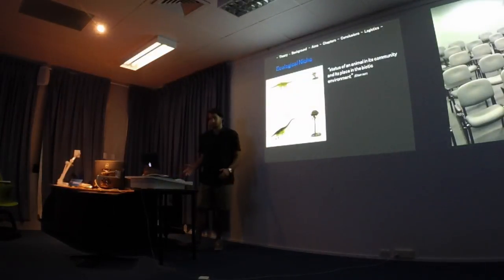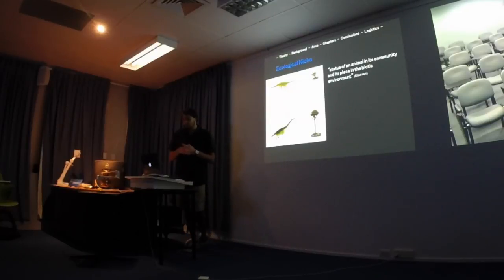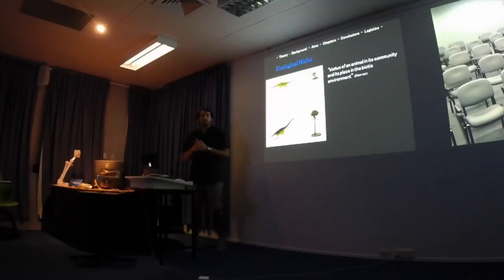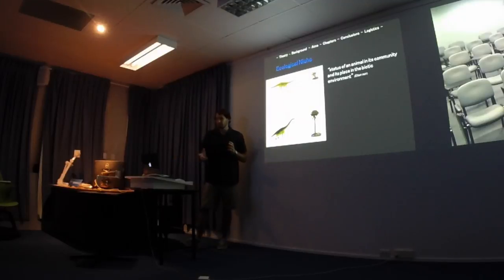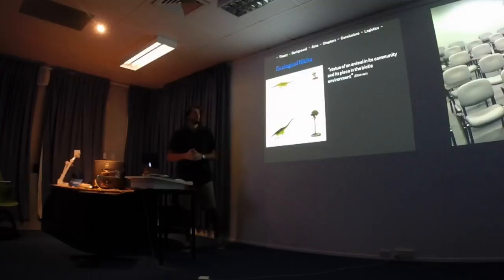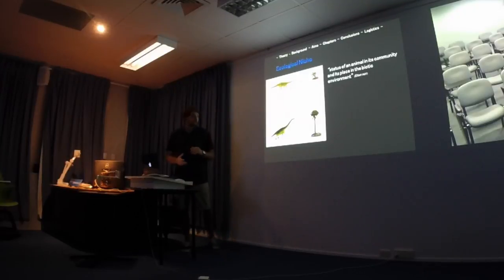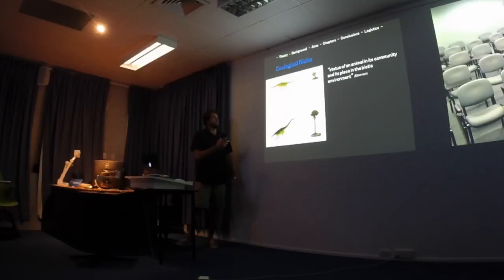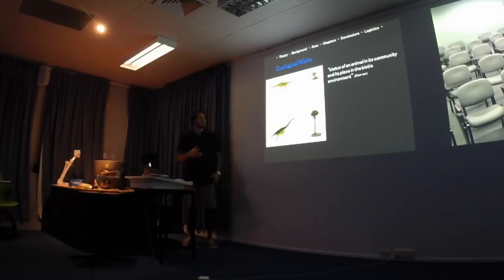What is an ecological niche? It's been defined by Elton as the status of an animal within its community and its place in a biotic environment. The definition of a niche has varied and changed even within fields. This definition was chosen partly because of the biotic environment component. In a dinosaur example, one dinosaur fills the short tree niche while another fills the tall tree niche.